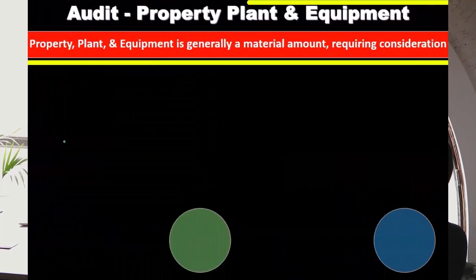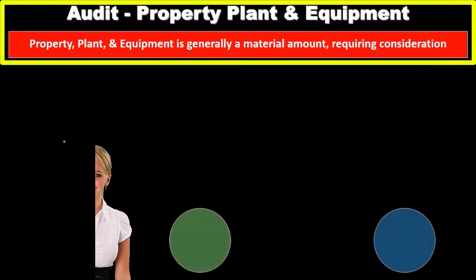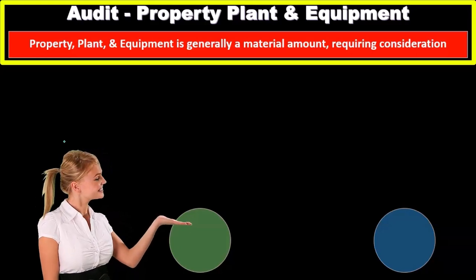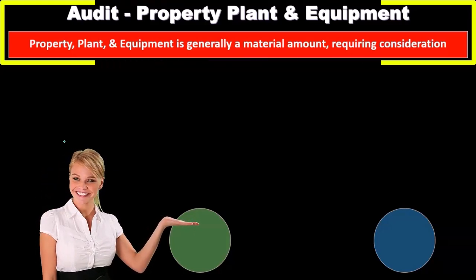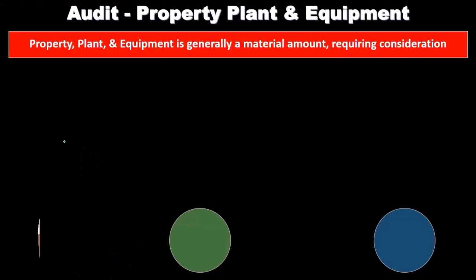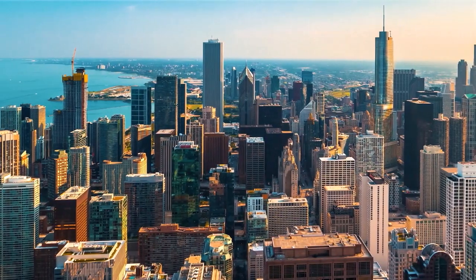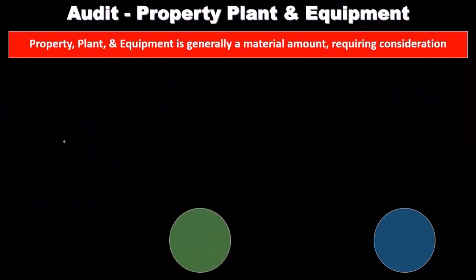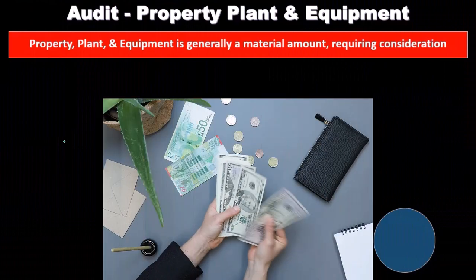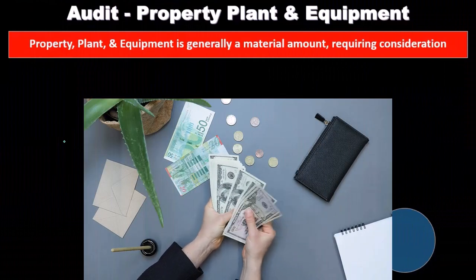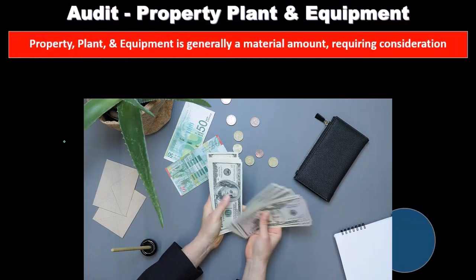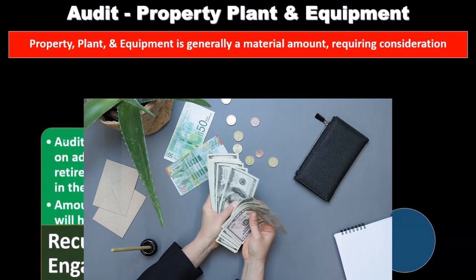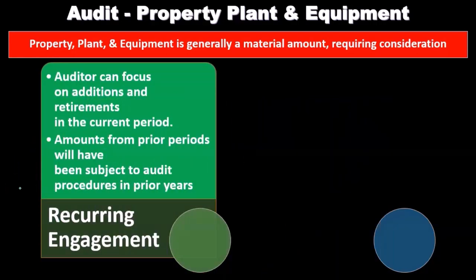When considering the audit process for property, plant, and equipment — those depreciable assets, things like land, equipment, and buildings — these are typically going to be significant, large amounts on the financial statements, so they warrant our concern. They will be material factors that we need to consider.